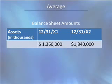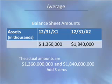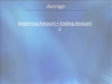Here is asset information for the beginning of the year 12/31/X1 and the end of the year 12/31/X2. Notice the amounts are shown in thousands, meaning the last three zeros have been omitted. This helps with the presentation of large dollar amounts. For the average, we simply add the beginning and ending amounts together and then divide by two.